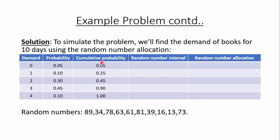Here the cumulative probability is 15, so we left out the 15th value and the random number interval is from 5 to 14. The cumulative probability for the next demand is 45, so we left out the 45th value and the random number interval is from 15 to 44. In a similar manner we calculate the random number intervals for the remaining demand values. These are all the random number intervals.